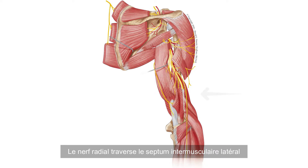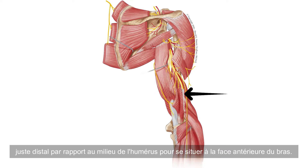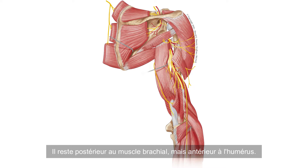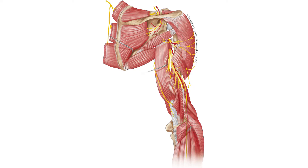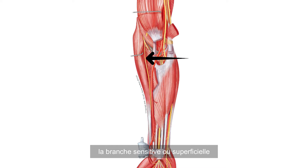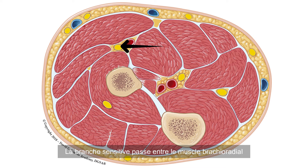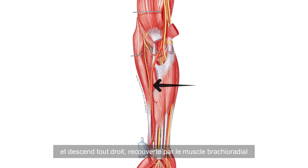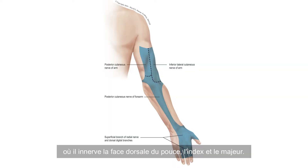The radial nerve crosses the lateral intermuscular septum just distally of the middle of the humerus to pass to the anterior side of the upper arm. It remains posterior to the brachialis muscle but anterior to the humerus. It divides at the level of the elbow into two branches: the sensory or superficial branch and the motor or deep branch. The sensory branch passes between the brachioradialis and the extensor carpi radialis longus muscle and travels straight down, covered by the brachioradialis muscle, towards the back of the hand, where it innervates the dorsal aspect of the thumb, the index and middle finger.